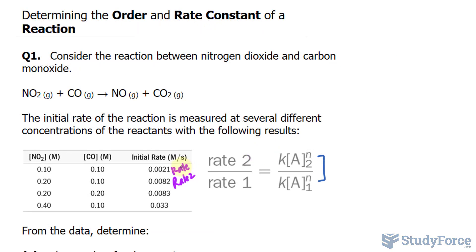So I'll replace those values into this formula where I have 0.0082 over 0.0021. And that's equal to our constant, k, multiplied to rate 2 for nitrogen dioxide, its molarity, is 0.20.